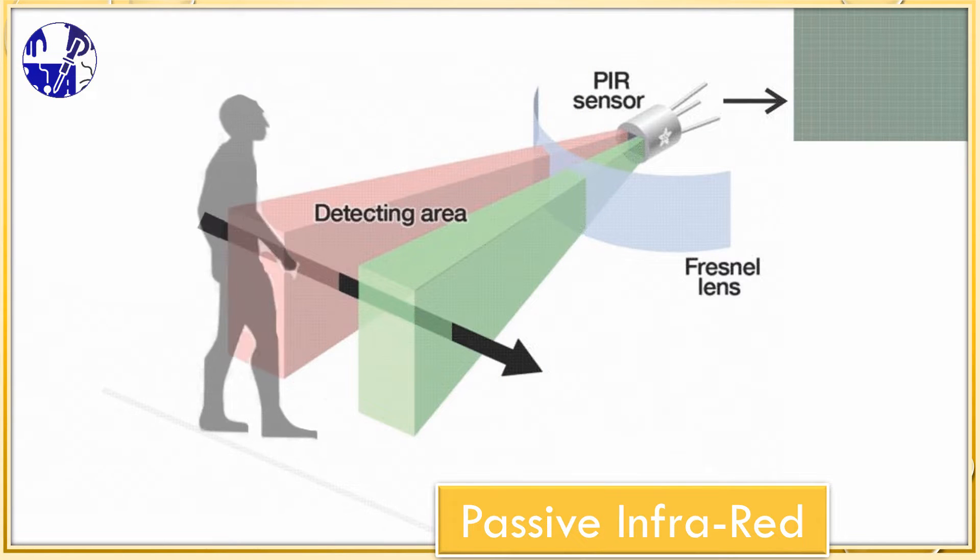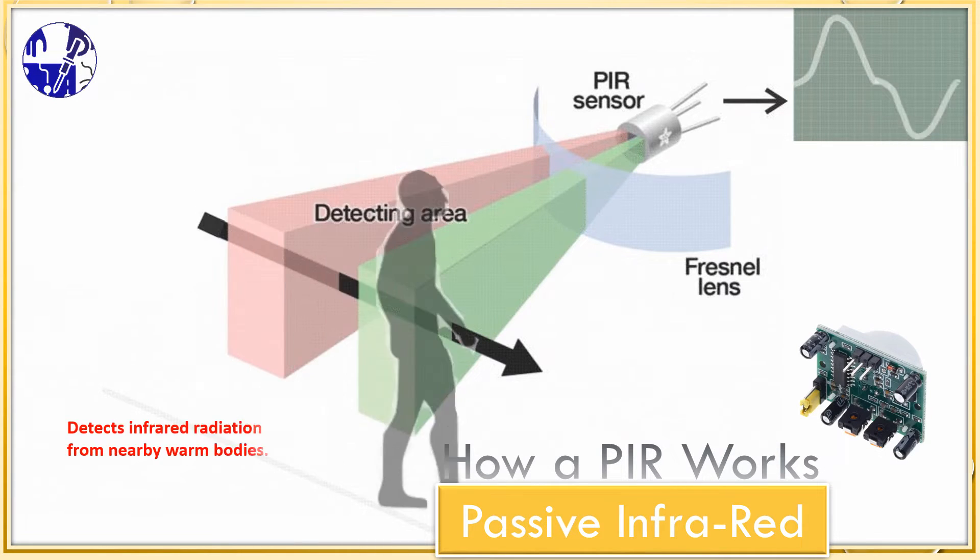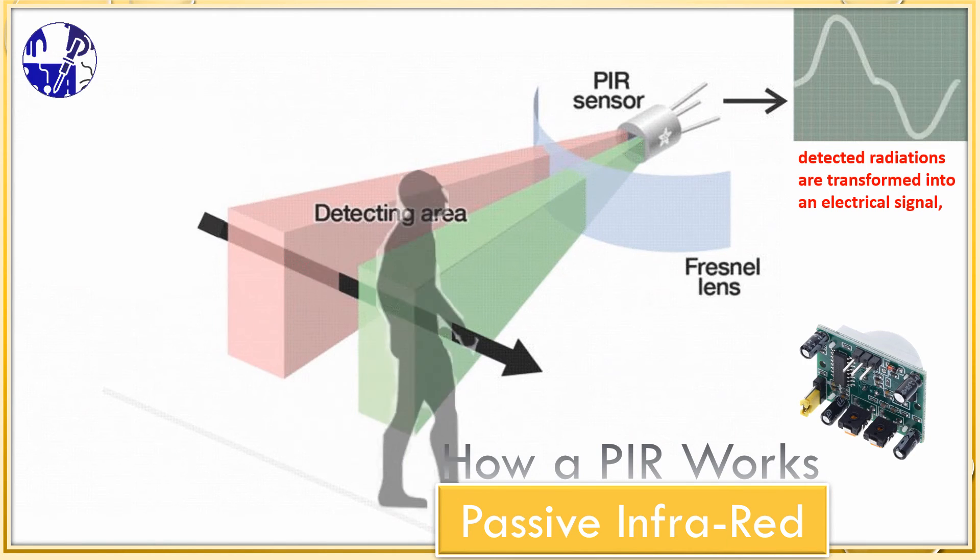PIR stands for passive infrared. The passive part means it doesn't send out signals, but instead detects infrared radiation from warm bodies nearby. Detected radiations are converted into electrical signals proportionate to the radiation level. This signal is applicable to external circuits for amplification and triggering alarm stages.